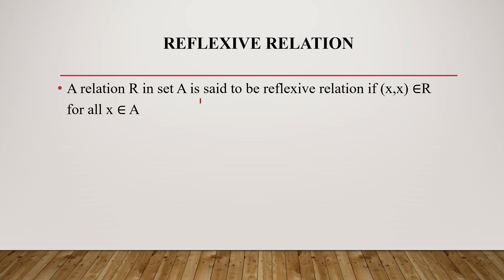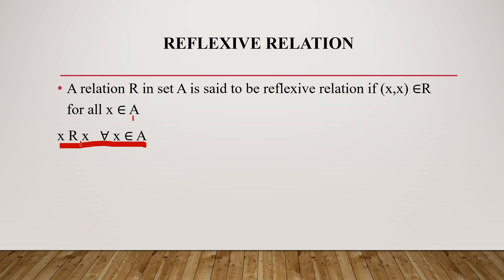A relation R on set A is reflexive if (x, x) is an element of R for all x element of A. This is the mathematical representation — for all x element A, x is related to x.